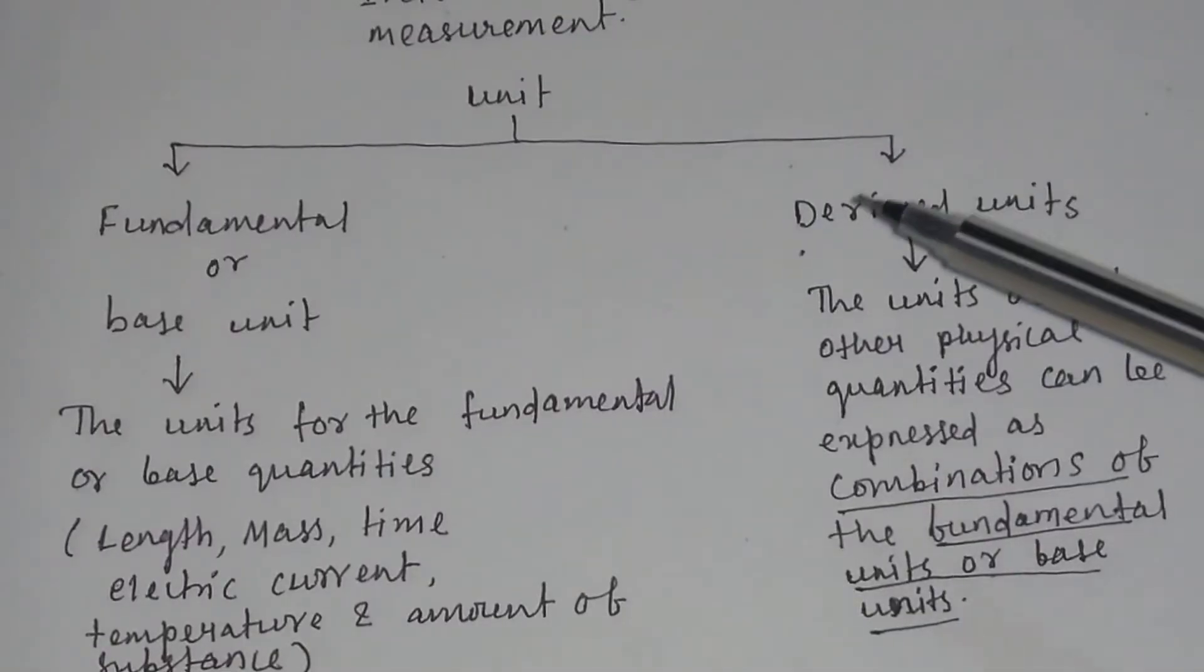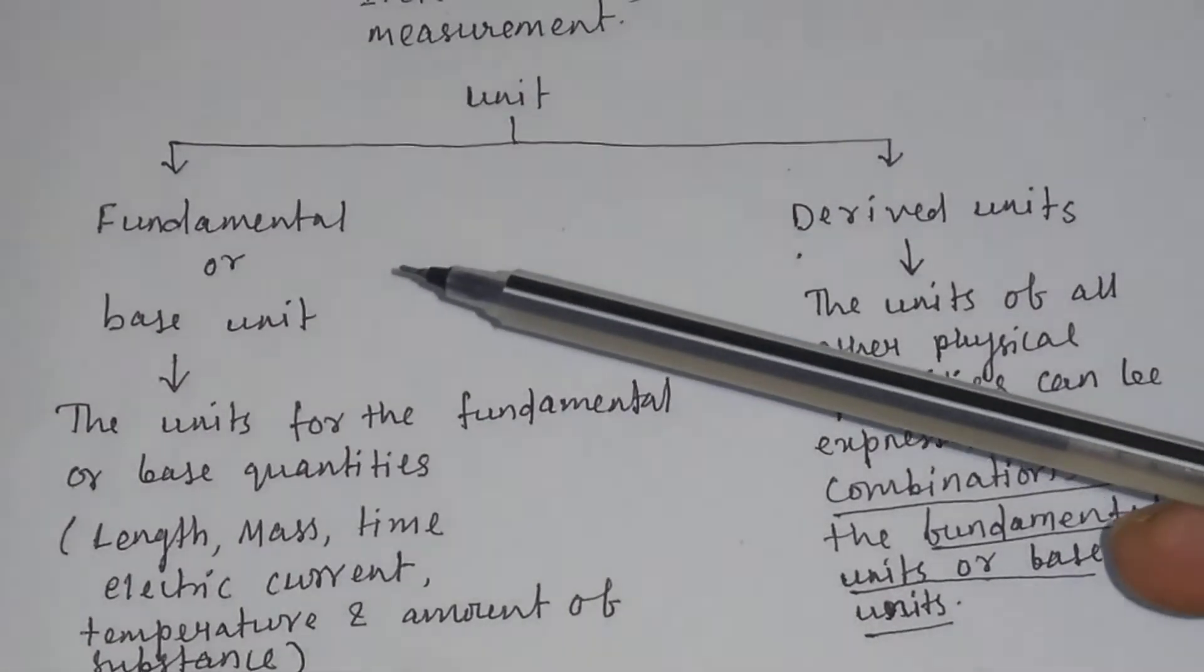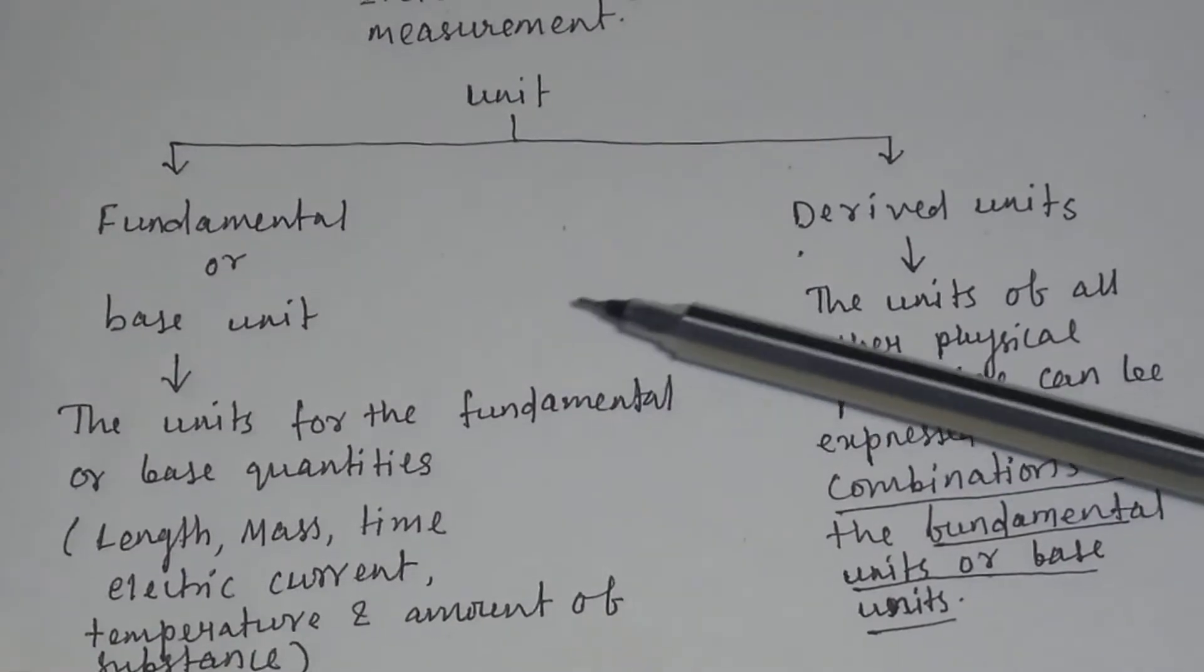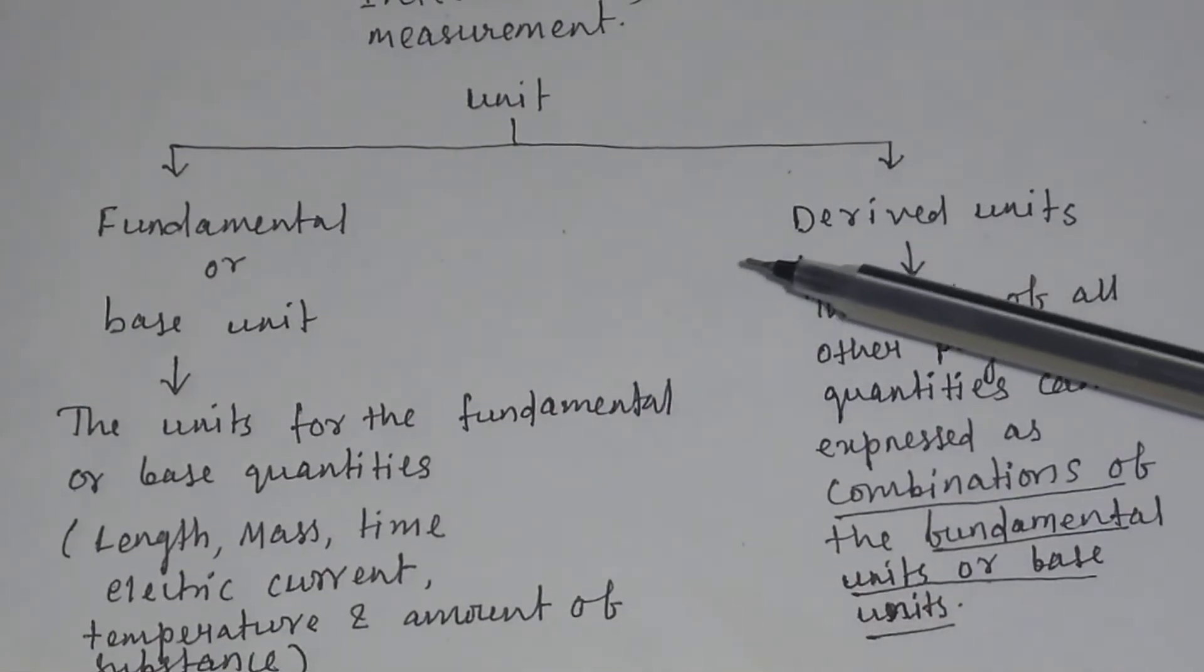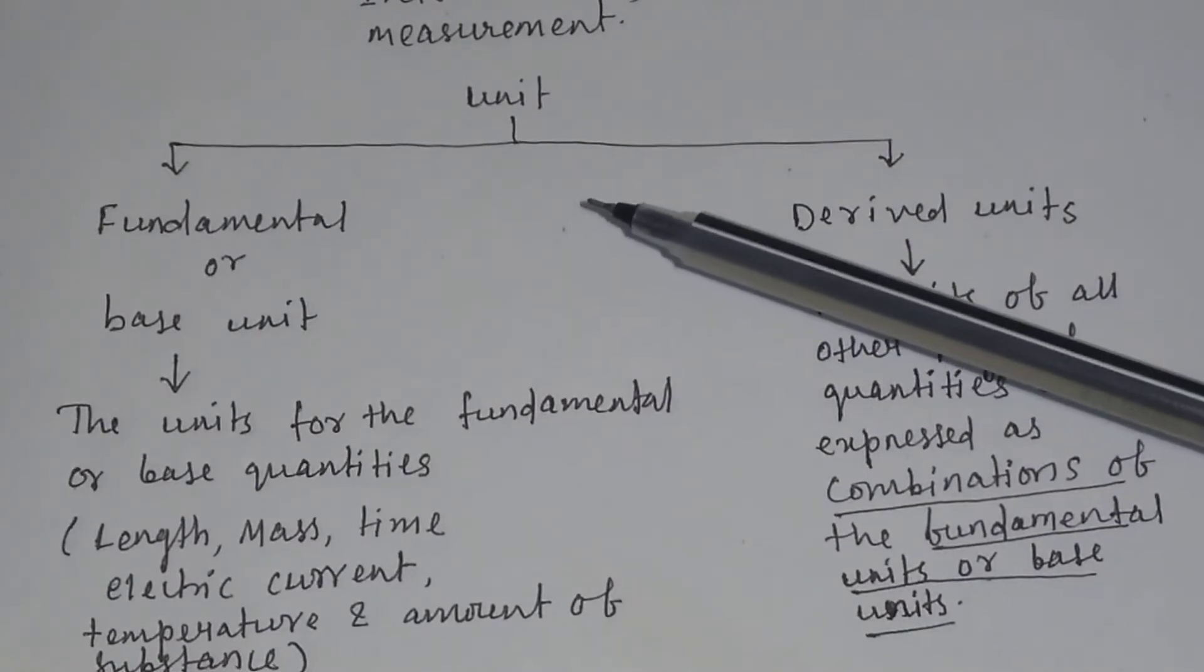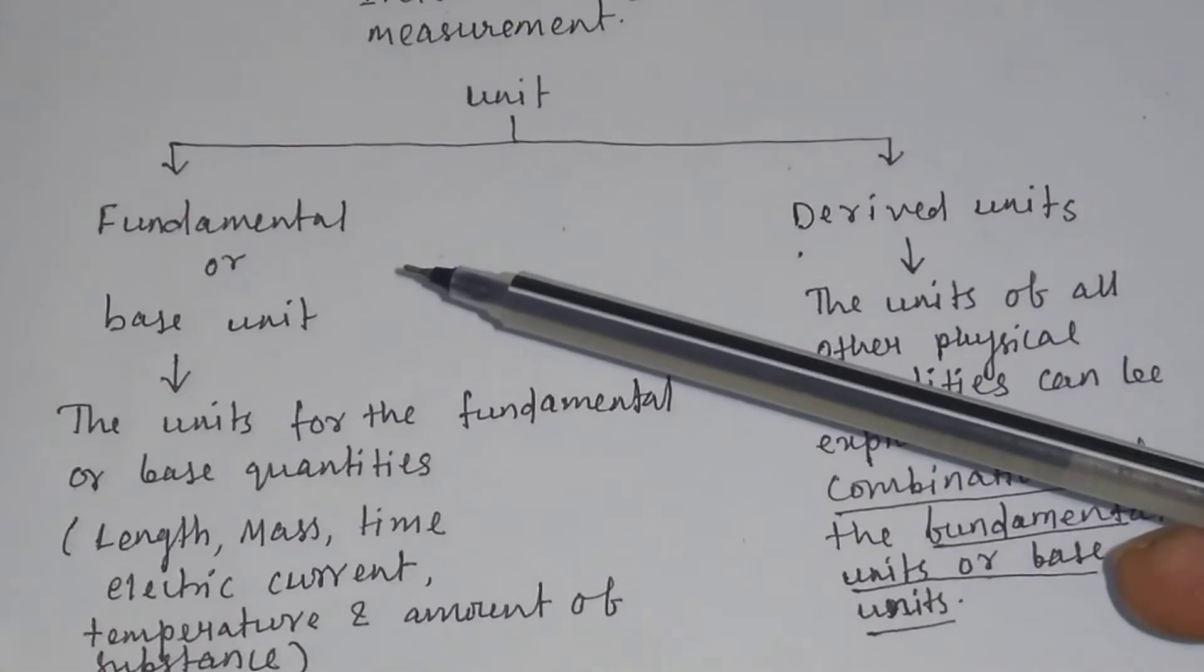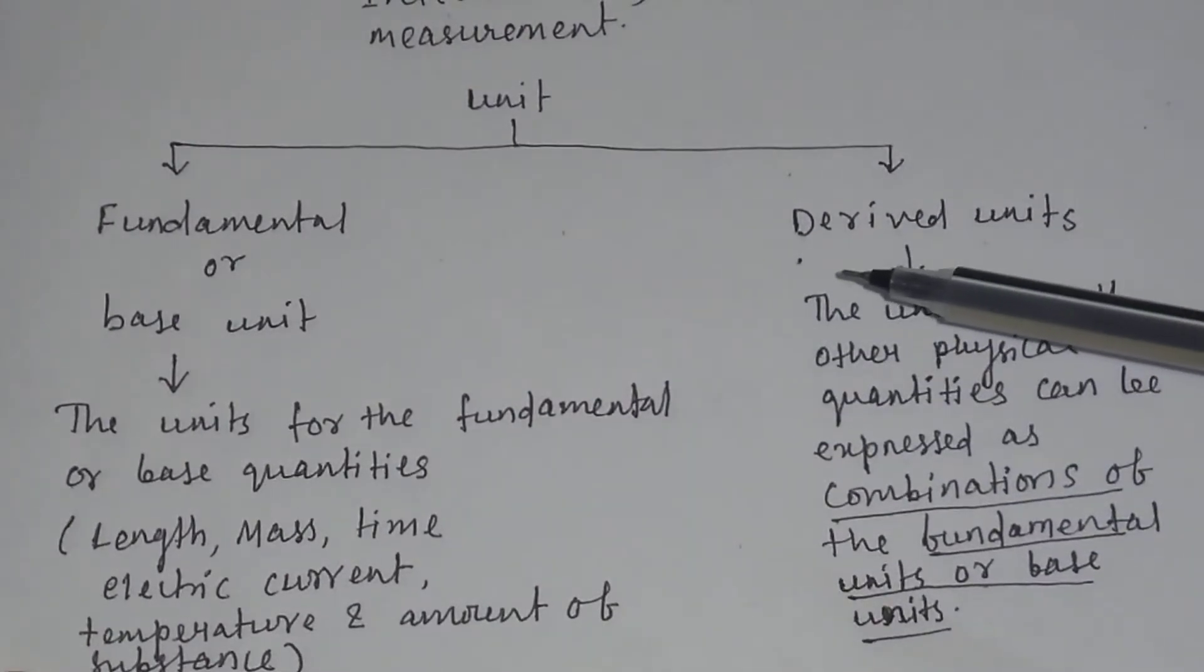There are two types of units. One is the fundamental unit, or base unit, and another is called the derived units. So, all physical quantities can be measured in terms of these two types of units: fundamental units and derived units.